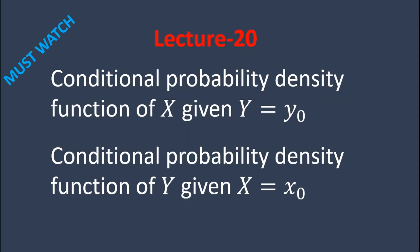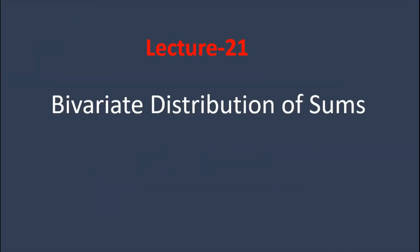Hello everyone. In the last lecture I discussed the conditional probability density function of X given Y equals y-naught, and the conditional PDF of Y given X equals x-naught. In this lecture I am going to discuss about bivariate distribution of sums.